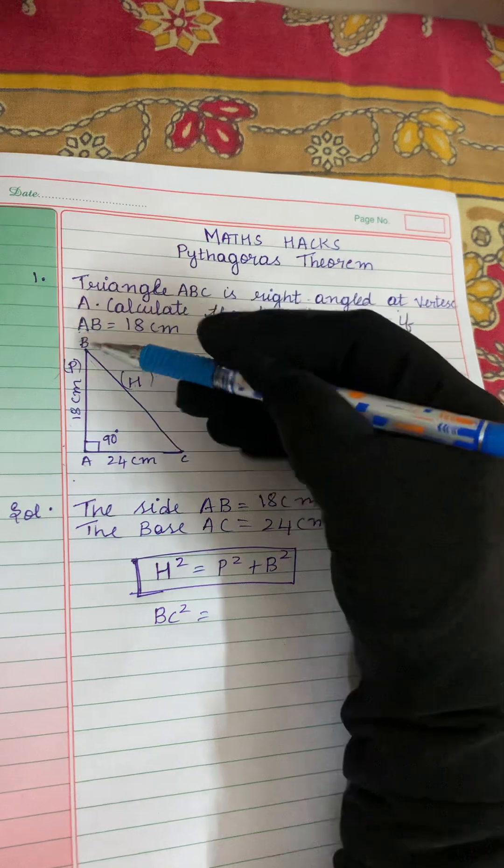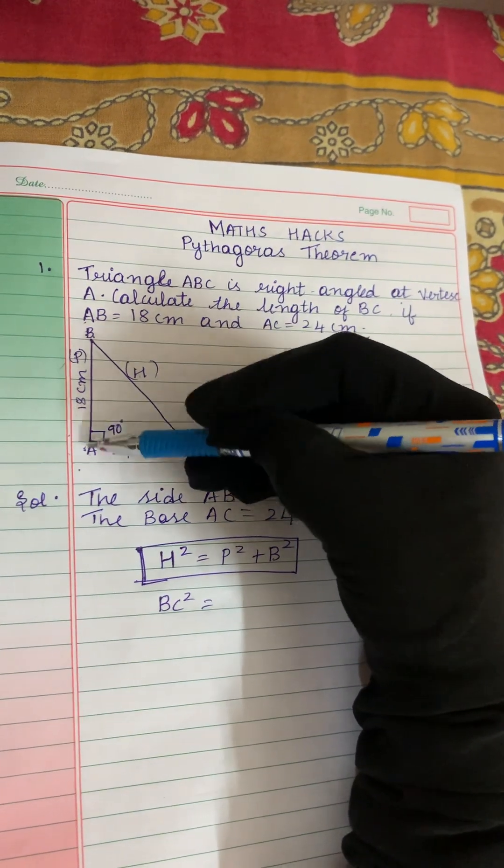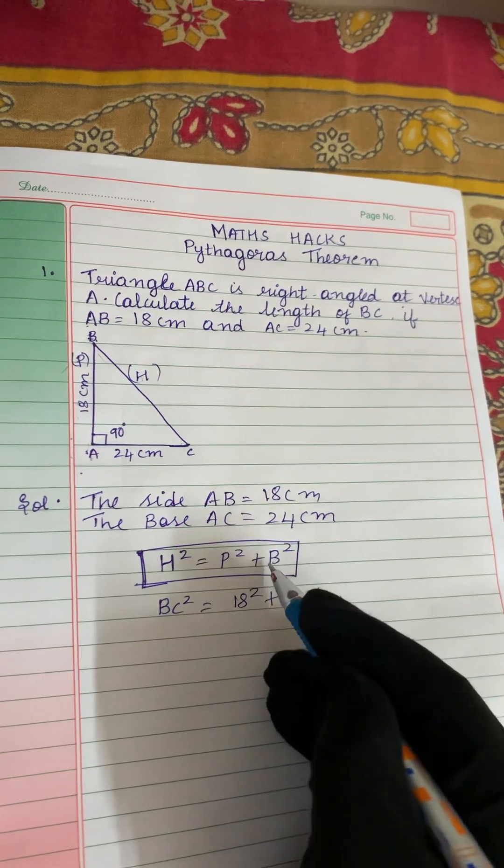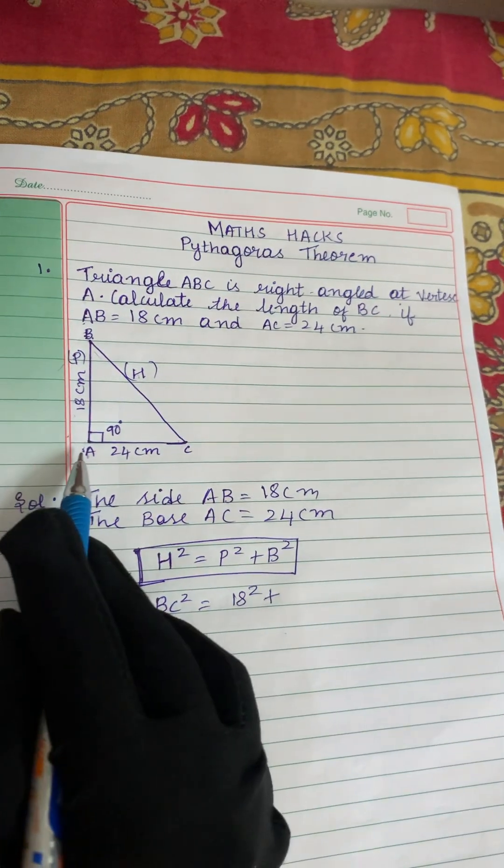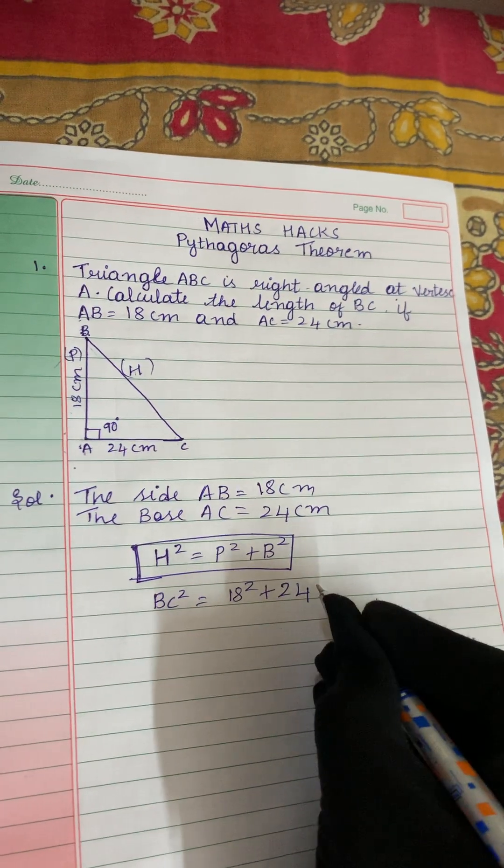P is the perpendicular side. AB is the perpendicular side. The value of AB is 18 cm. We will write here 18² plus B. What is B? B is base. Here the value of base is 24 cm. So we will write here 24².